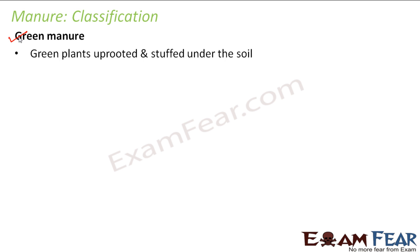The next type of manure is green manure. Green manure is formed from green plants — some green plants are uprooted and stuffed under the soil. The green plants are decomposed in the soil; that means some plants are grown, then uprooted and dug back into the soil. In due course of time those green plants decompose and form green manure. That is why it is called green manure — because it is formed from green plants.